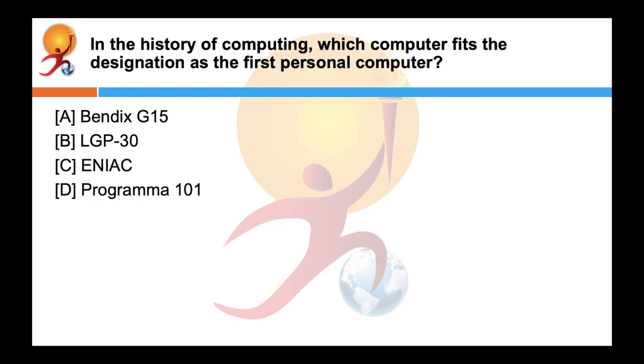In the history of computing which computer fits the designation as the first personal computer? Answer is C ENIAC. ENIAC was the first personal computer. It had become operational in 1946. ENIAC stands for Electronic Numerical Integrator and Computer.